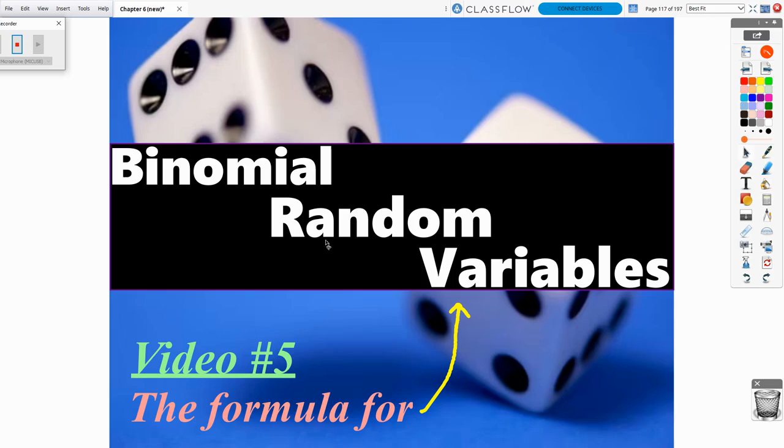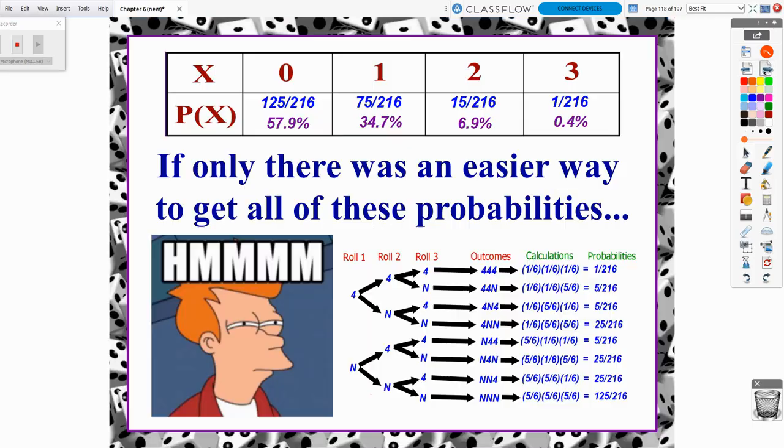Video 5 of Chapter 6, we are going to continue on in our discussion of binomial random variables. Specifically, we get to talk about the formula that we did not talk about in Video 4. So in Video 4, we talked about a scenario of rolling a fair die three times, and we wanted to know how many fours would pop up.